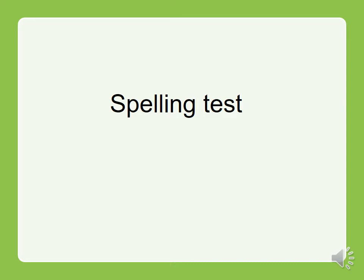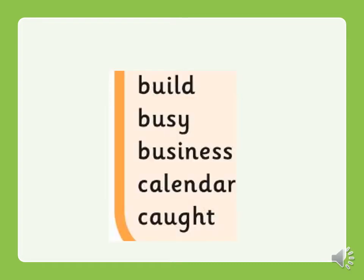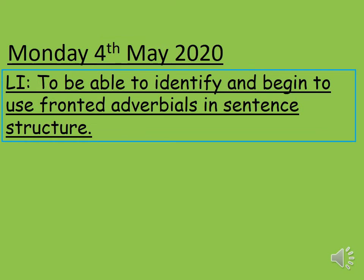Okay, so those are your five words. I'm going to move on to the next page for you to then mark it. Here are your five words — pause the video for a minute or so and correct all your spellings before we move on to the lesson. So: build, busy, business, calendar, and caught. Can you write the date and the learning intention in the top left-hand corner of your sheets or the books that you have?